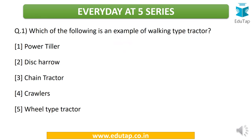Now here come four questions. These are not exactly on tillage only but we have included other topics like tractor as well, as we are trying to cover agricultural engineering as a whole. You need to tell me the answers in the comment section below, and tomorrow we shall discuss the answers. Question 1: which of the following is an example of a walking type tractor? The options are power tiller, disc harrow, chain tractor, crawlers, and wheel type tractor. Which among the following is an example of a walking type tractor?